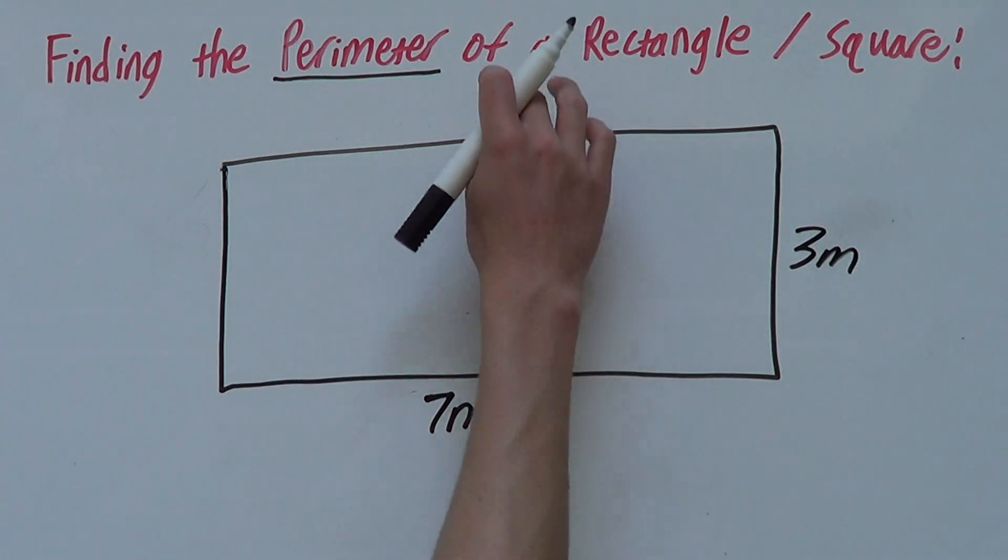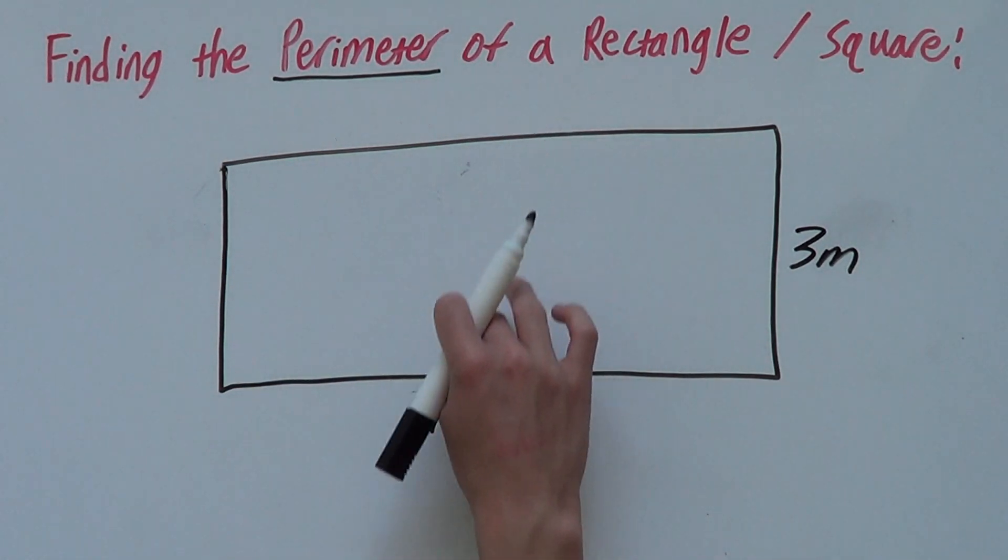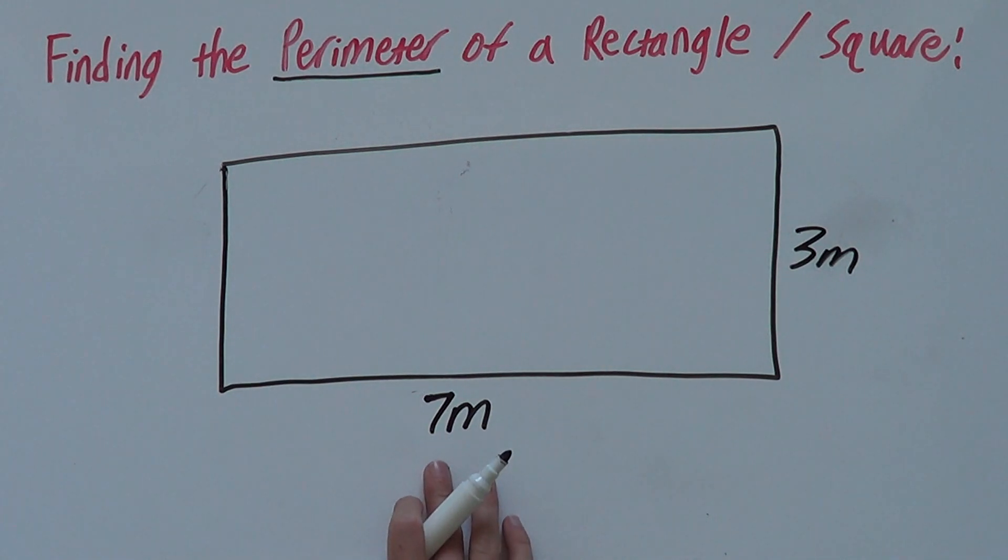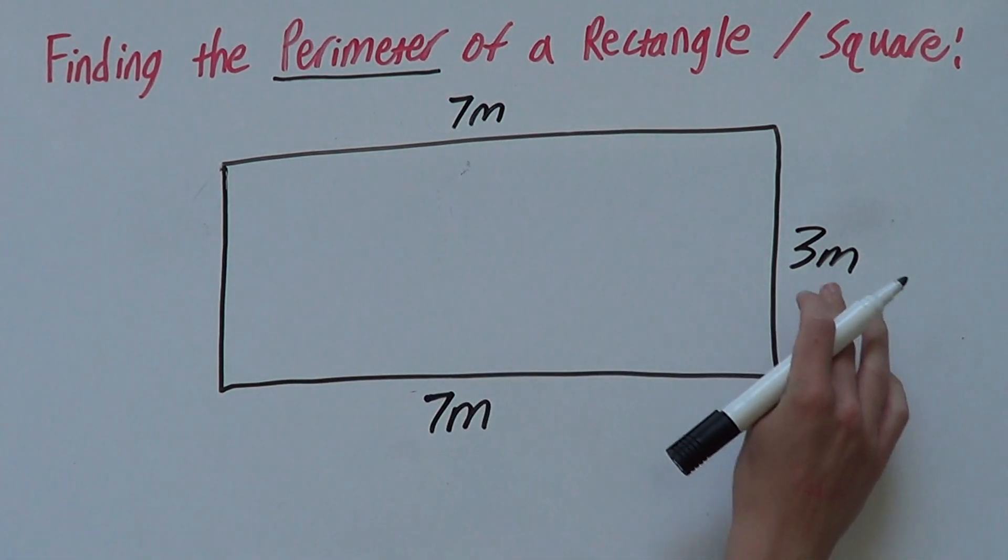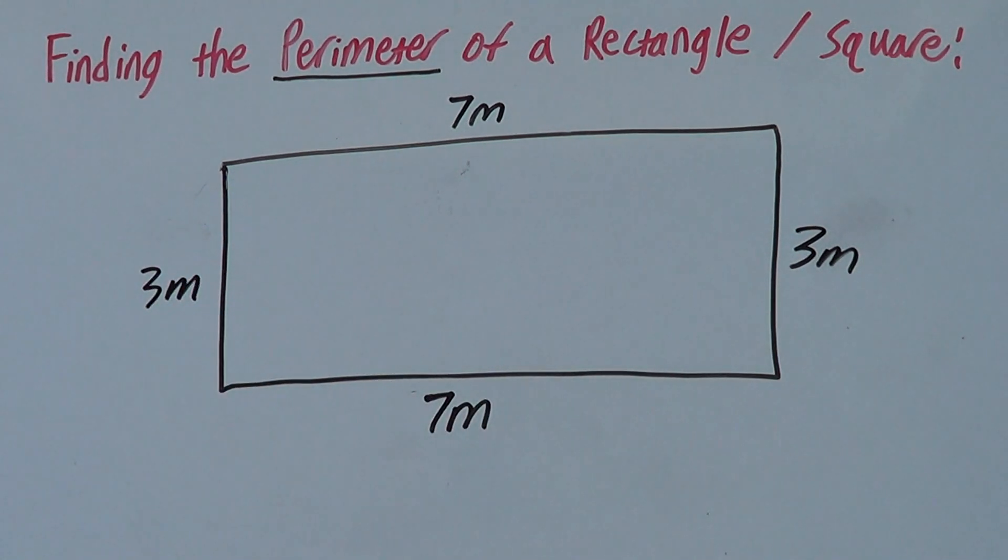Remember, the opposites are equal. So if you're not given them, you just look at the side opposite to it. So this is 7, so we know this side is 7 too. And this is 3, so we know this side is 3 meters as well.